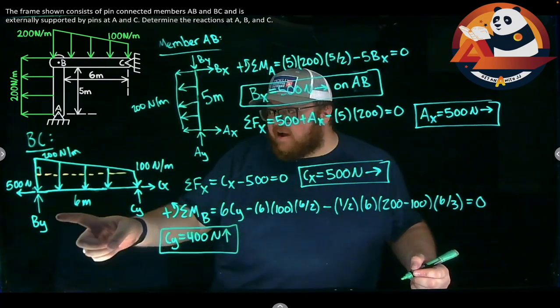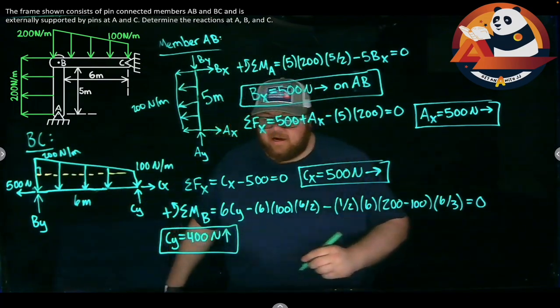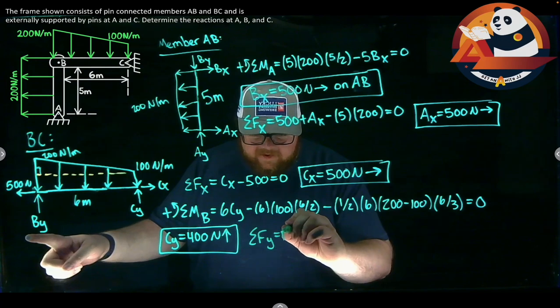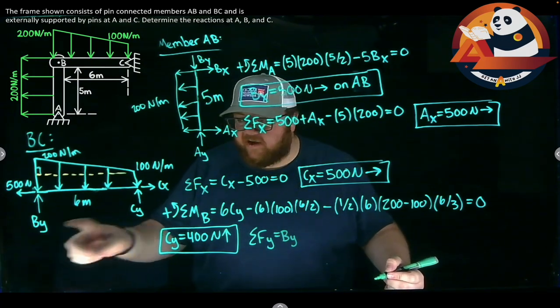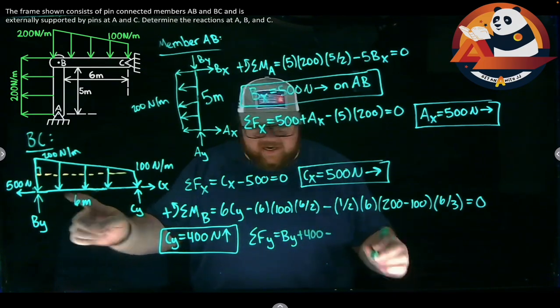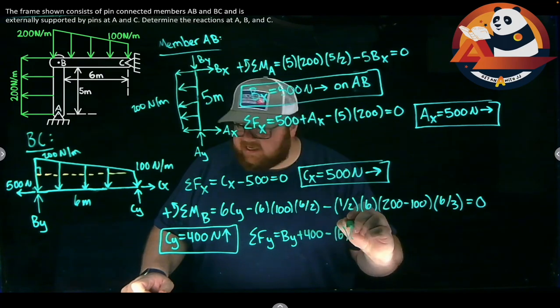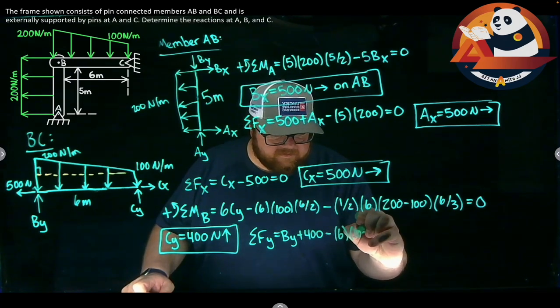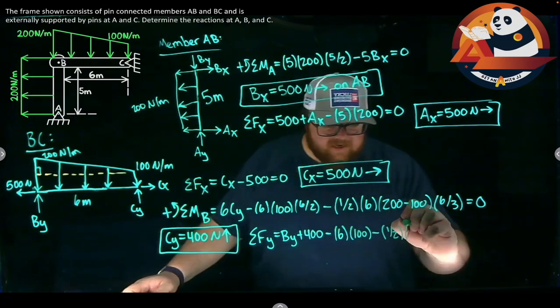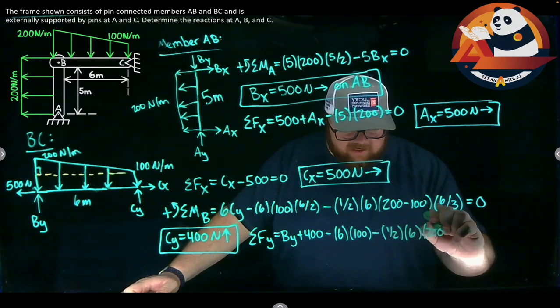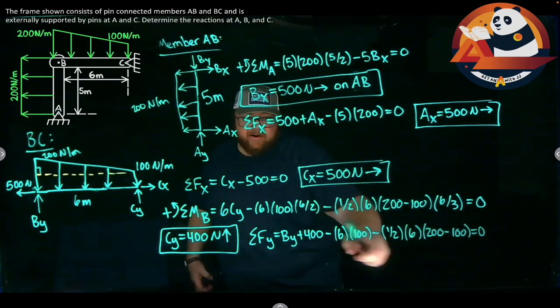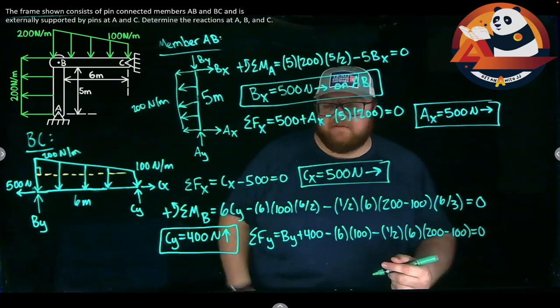With that note, I can now sum forces in the Y to get BY. I'm summing my forces in the Y direction. I have BY going up. That's my last unknown from this free body diagram. Plus CY. Plus 400. Minus the area of the rectangular distributed load. Minus base times height. Six times 100. Minus the area of the triangular distributed load. Or minus one half. Base six times height. 200 minus 100. It will get us to zero. Again, we're just finding areas. Area of a distributed load is the force of the distributed load.